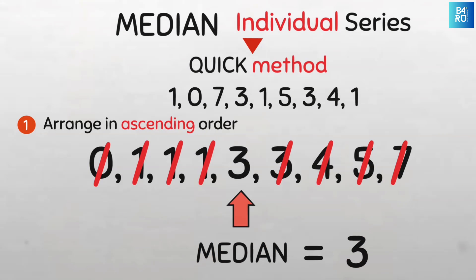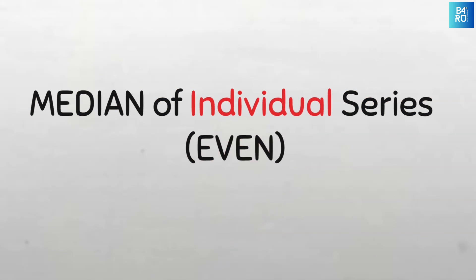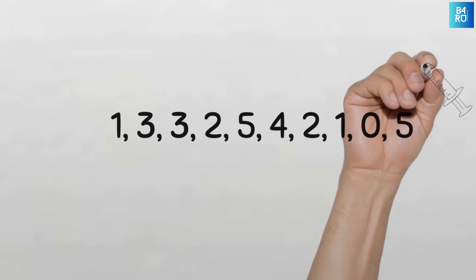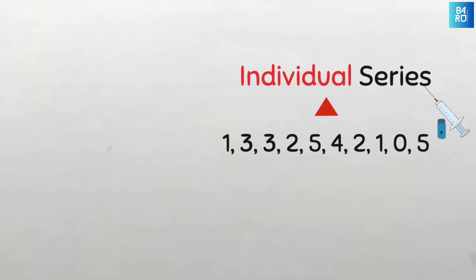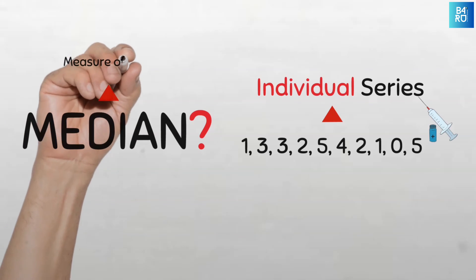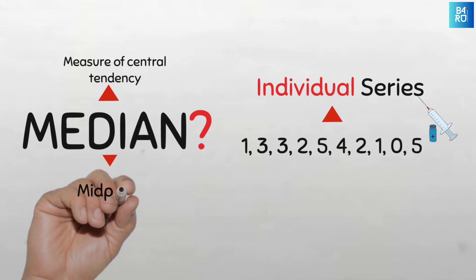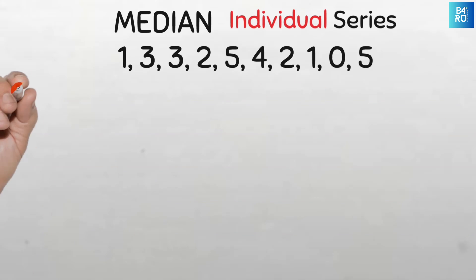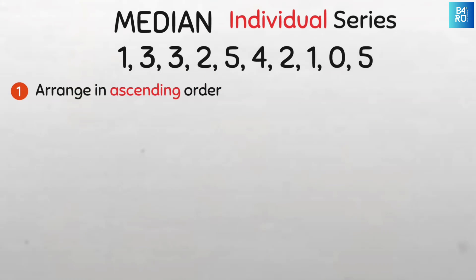Now what happens when our data set has an even number of values? How to find the median for individual series data with an even number of values. This is the individual series data of the number of times that 10 children were vaccinated in their lifetime. Let's find the median. To do this we need to first arrange the data in ascending or descending order — I prefer ascending because it's just logical.